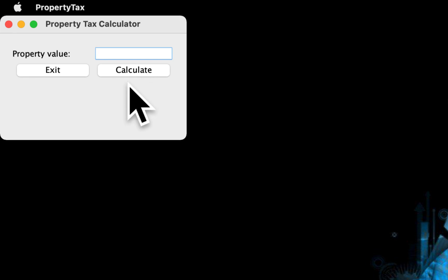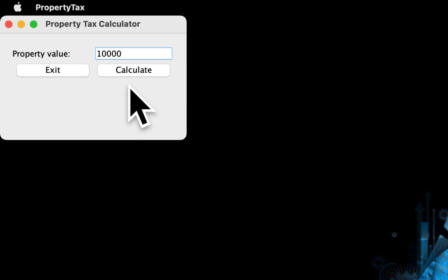In the book they used a ten thousand dollar actual value. They said if the property has a ten thousand dollar actual value, the assessed value would be six thousand. So let's enter ten thousand — the assessment should be six thousand and the property tax should be $38.40.